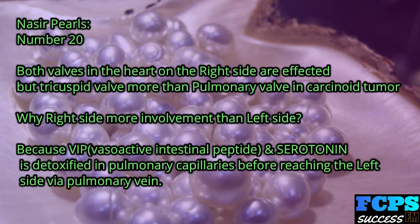Nasir Pearl number 20: In carcinoid tumor, both valves on the right side of the heart are affected, but the tricuspid valve more than the pulmonary valve. The reason for greater right-side involvement is that VIP (vasoactive intestinal peptide) and serotonin are detoxified in the pulmonary capillaries before reaching the left side via the pulmonary vein.